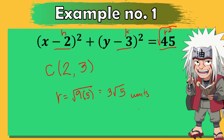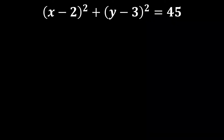We need to get the decimal value of the square root of 45, and that is 6.71. So the radius is 6.71 units. The center is (2, 3) and the length of the radius is 6.71 units. But we are not done yet — what we need is the general form of the equation of the circle.